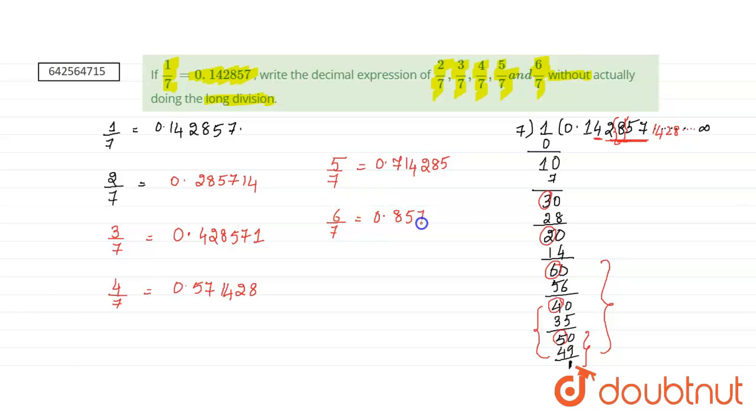0 point, 8, 5, 7 and the first 3 digits come at the last, 1, 4, 2.